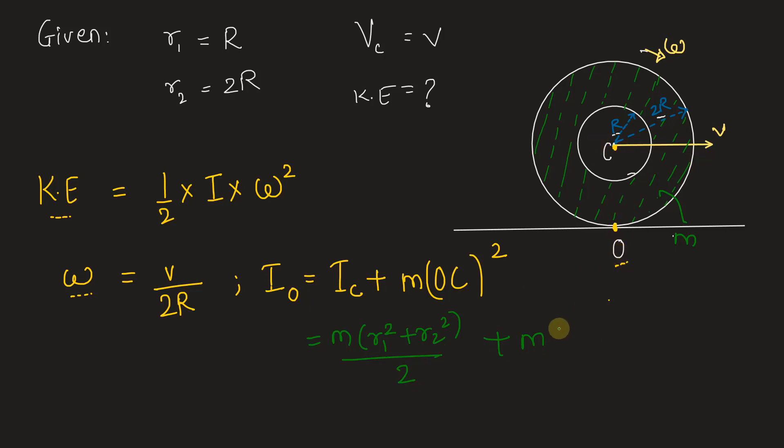OC distance is 2R. So, we can substitute it directly 2R square. Therefore, IO will be equal to M into R1 is R, so R square plus 2R square. R square plus 2R whole square is 4R square divided by 2 plus 4mR square.